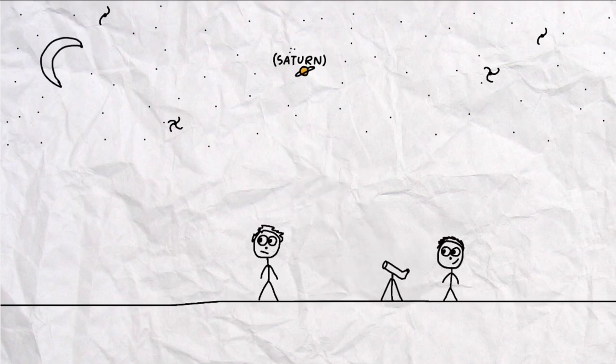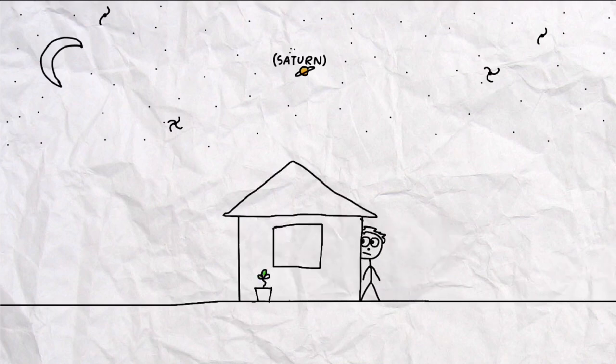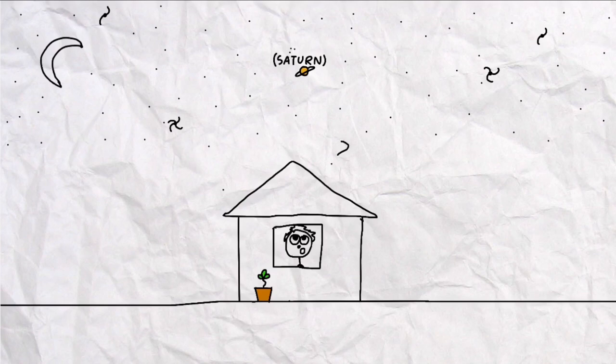But when Roche returned home, he knew that the answer was much more complicated. What really caused the rings of Saturn? Maybe it's not as simple as it seems.